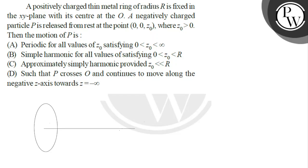Let's read the question. A positively charged thin metal ring of radius R is fixed in the XY plane with its center at the origin O. A negatively charged particle P is released from rest at the point (0, 0, z₀), where z₀ is positive.